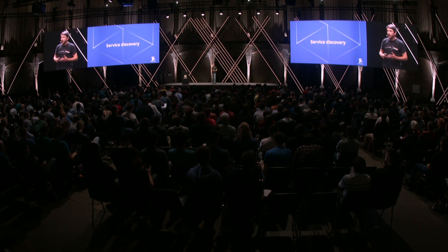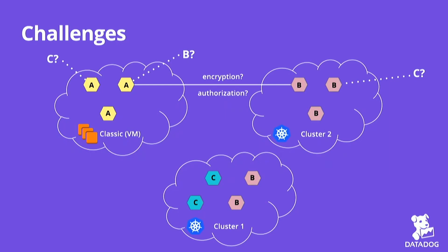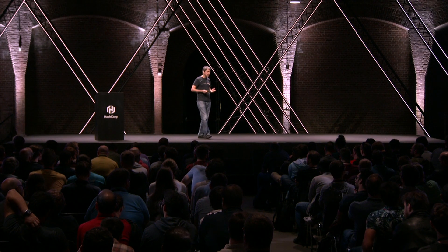So let's dive now into service discovery. As I was saying before, we have both virtual machines and Kubernetes clusters, and this makes service discovery very challenging. Before Kubernetes, we had a large set of virtual machines — tens of thousands — and service discovery was local to that set of machines. Now we are migrating to Kubernetes. We're introducing multiple Kubernetes clusters, because at our scale we cannot have just one. And we're providing our services in different regions across different cloud providers.